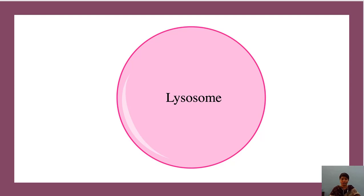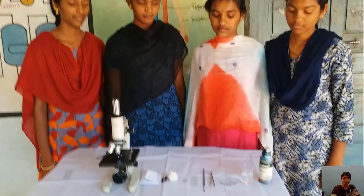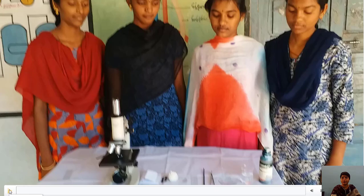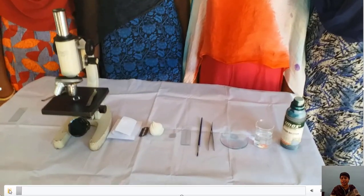Now I want to discuss another organelle useful in releasing energy for the cell. Cells require energy to perform various activities; that energy comes from mitochondria — the energy-releasing organelle. Have you ever observed mitochondria? To do so, you need to perform a lab activity — I will now show you the video where my students are observing mitochondria in onion peel cells.